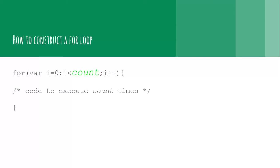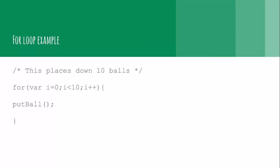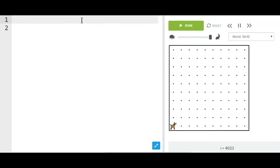The count shows how many times you want to execute your code. So this places down 10 balls: for var i equals zero, i is less than 10, i plus plus, and then put one ball.